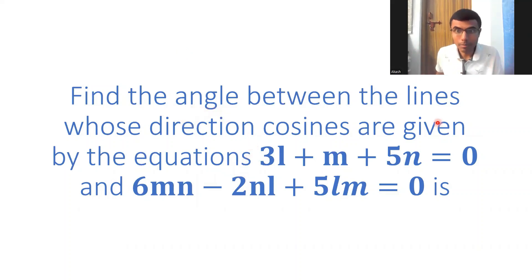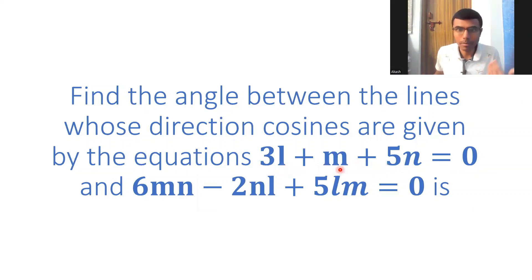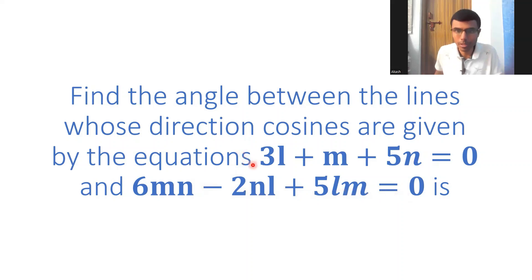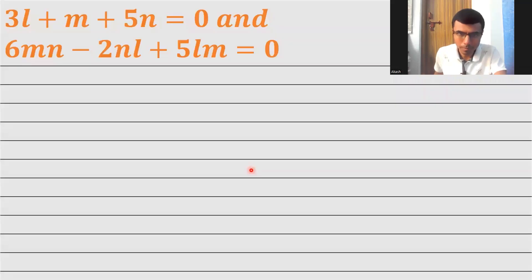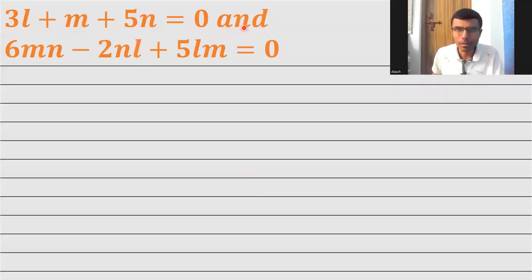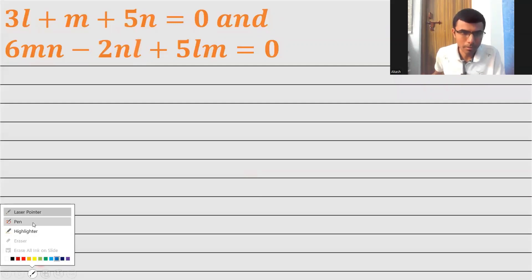Now let's see how to find out the angle between the given two lines whose direction cosines are given by the equations 3L plus M plus 5N equal to 0, and MN minus 2NL plus 5LM equal to 0. This is one of the important questions which can come in the board exam. It's a very simple type of question.